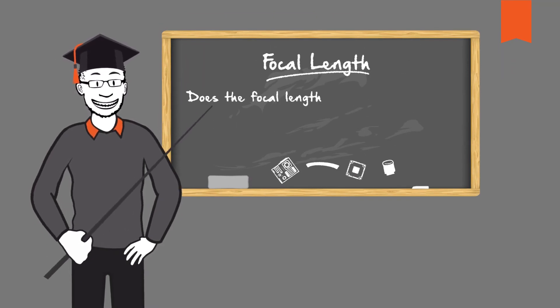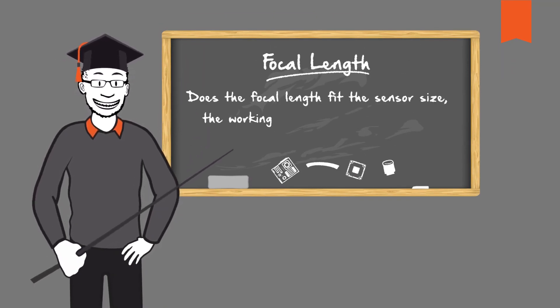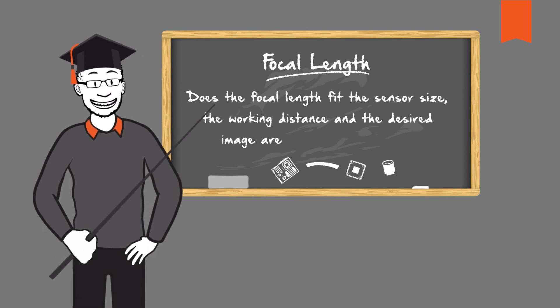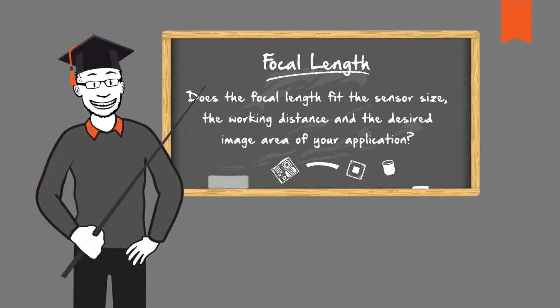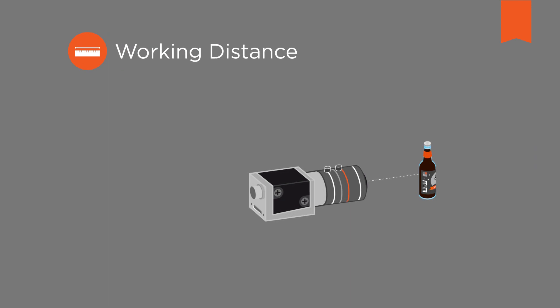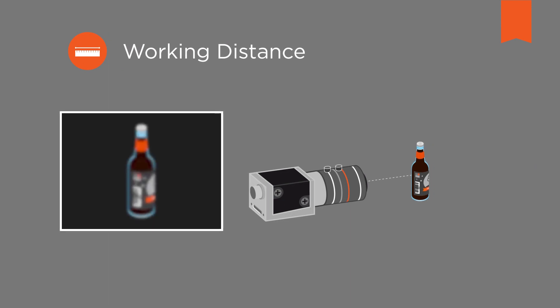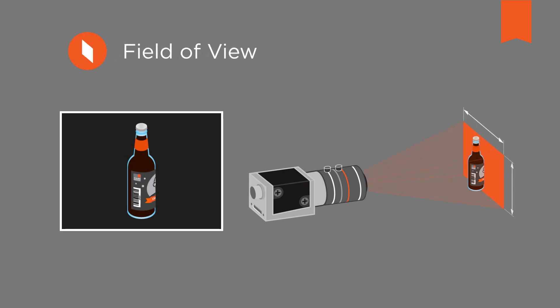Does the focal length fit the sensor size, the working distance and the desired image area of your application? Each lens has an optimal working distance. If the lens is positioned at this distance from the object to be captured or the scene to be observed, the maximum image sharpness is achieved. The size of the object, that is, the size of the field of view to be captured and evaluated by the camera is also important for the choice of the lens.